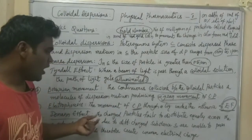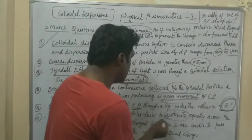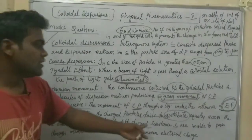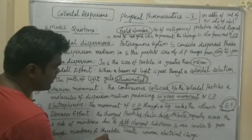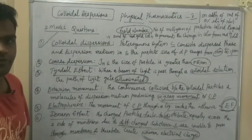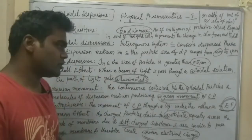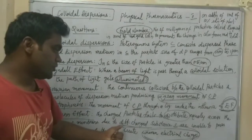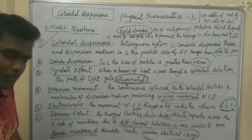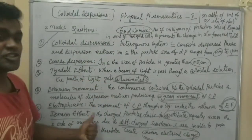Donnan effect: it is defined as the phenomenon where charged particles fail to distribute equally across the two sides of a membrane, due to a differently charged substance which is unable to pass through the membrane, and therefore creates an uneven electrical charge. This phenomenon is called as the Donnan effect.